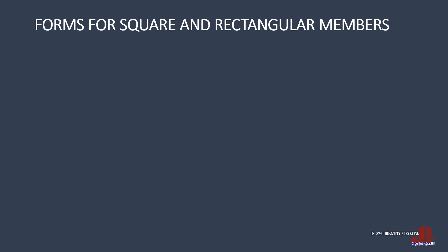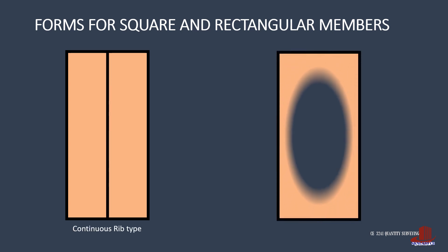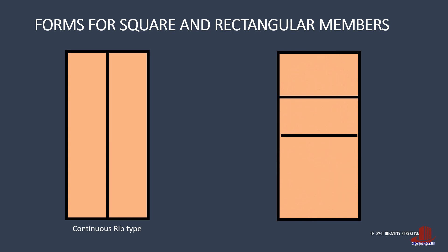There are two types of forms for rectangular members like columns and beams. The first is continuous rib type, where a frame has another bracing placed on the center. The other is stud type, where the form frame has to be reinforced transversely. The frame and ribs are mostly of 2 by 2 inch rough lumber, and the form itself is plywood.